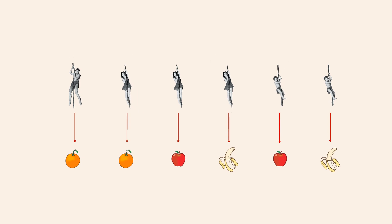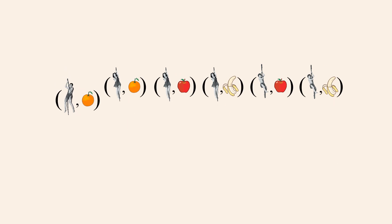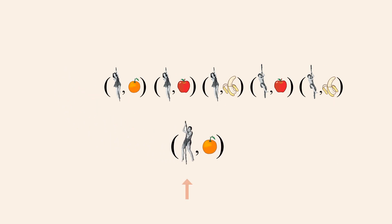Or instead of drawing arrows, we could represent each association between a person and a fruit as an ordered pair. In each ordered pair, the first element is a person from set A and the second element is one fruit from set B which that person likes. We call these pairs of elements ordered since the two elements cannot be swapped without changing the meaning of the relation.